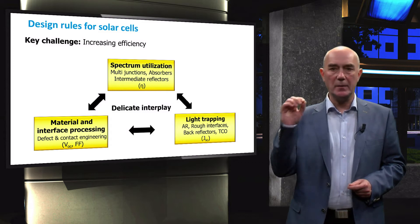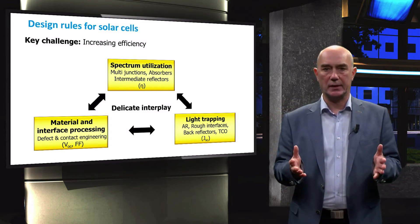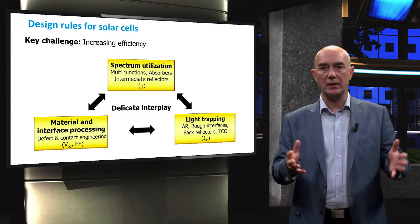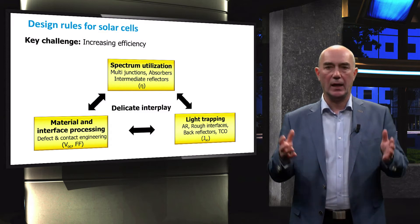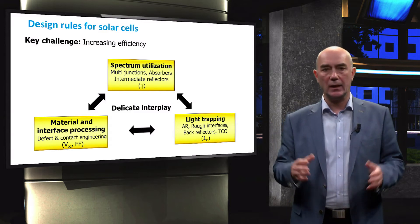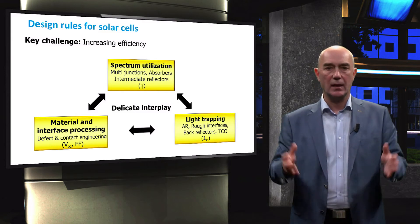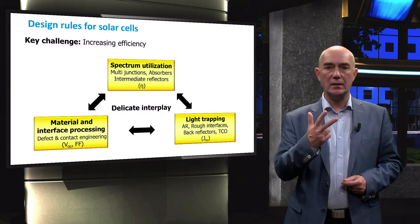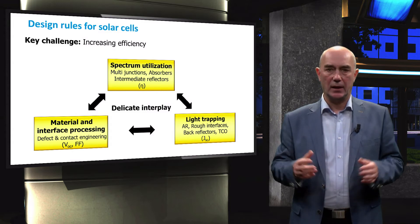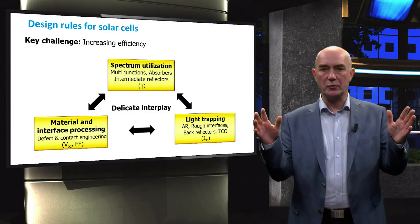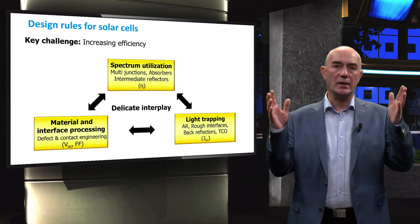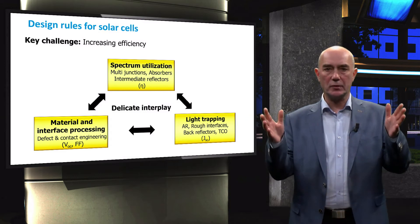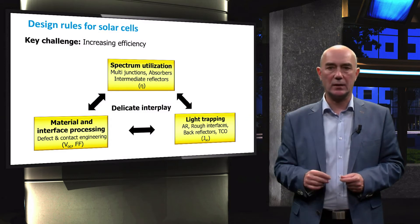Light management aims to reduce the optical losses in solar cells. In this area, the focus is on optimal design of rough interfaces for efficient scattering and diffraction of light, low-absorbing and high-conductive transparent electrodes, and design of anti-reflection structures and coatings. These three design rules affect each other, and thus the overall improvement of solar cell efficiency is a delicate interplay among them. In this video, we will focus on the multi-junction concept to increase the spectral utilization.